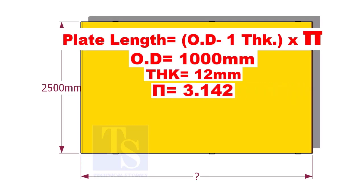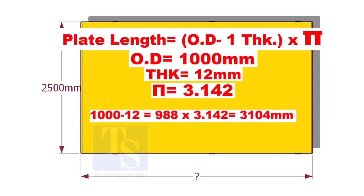1000 minus 12 is equal to 988 mm, multiplied by 3.142 is equal to 3104 mm.